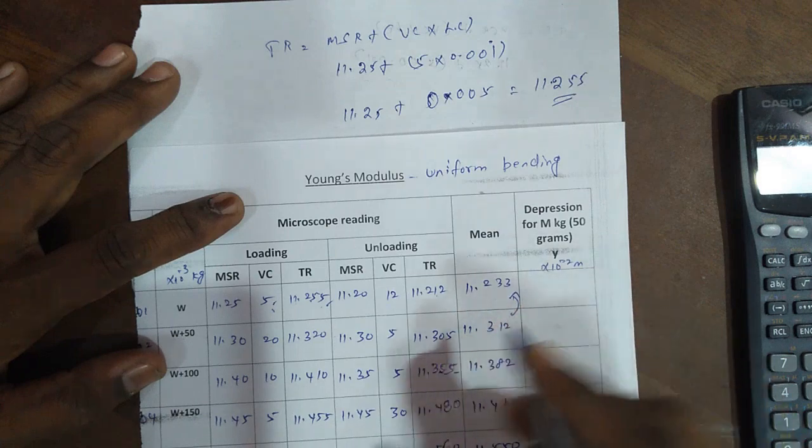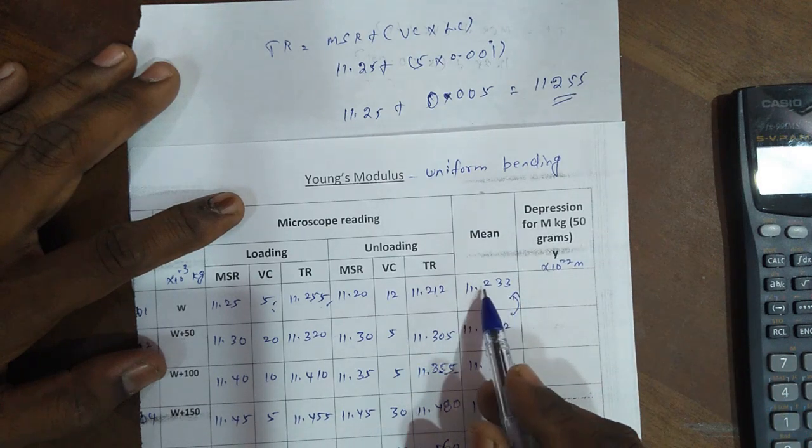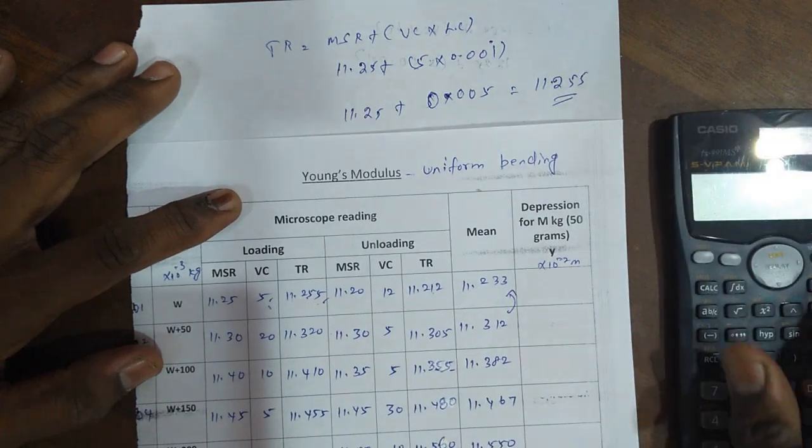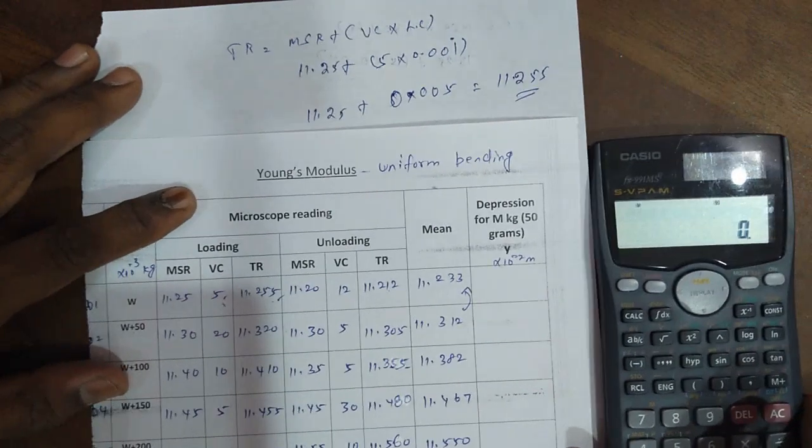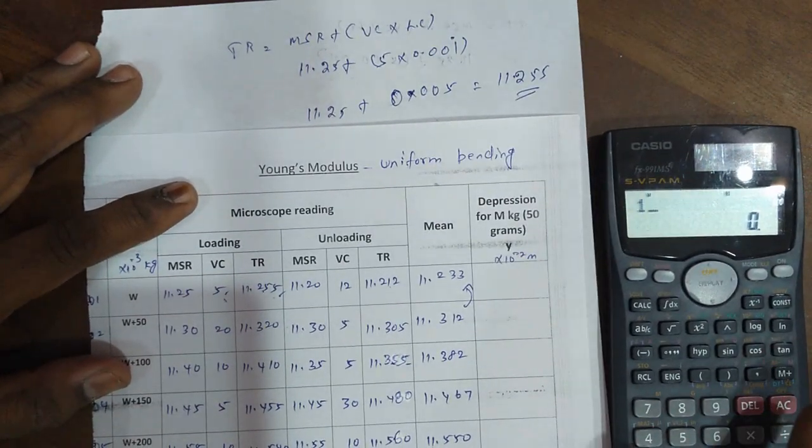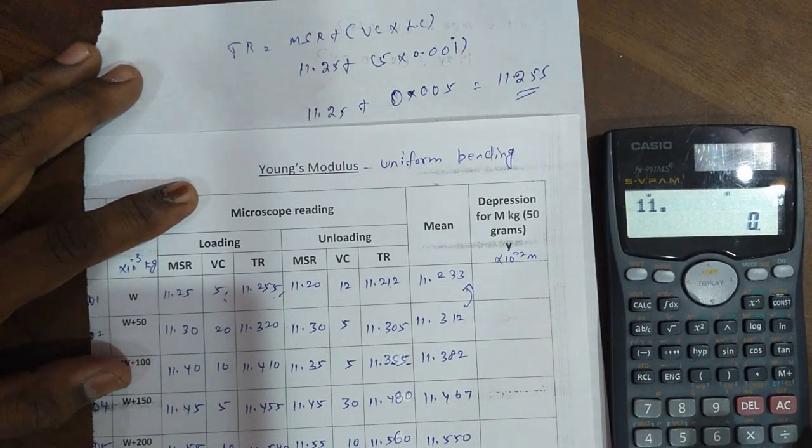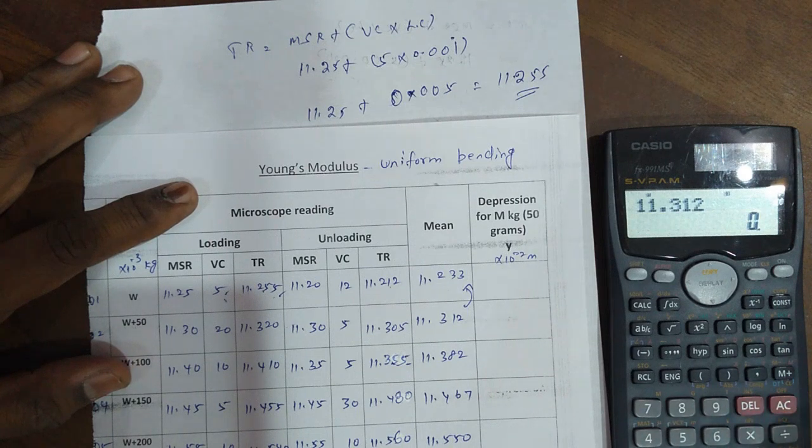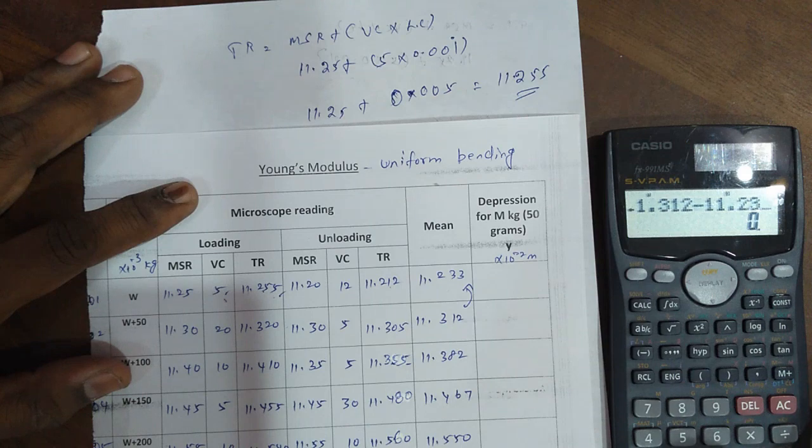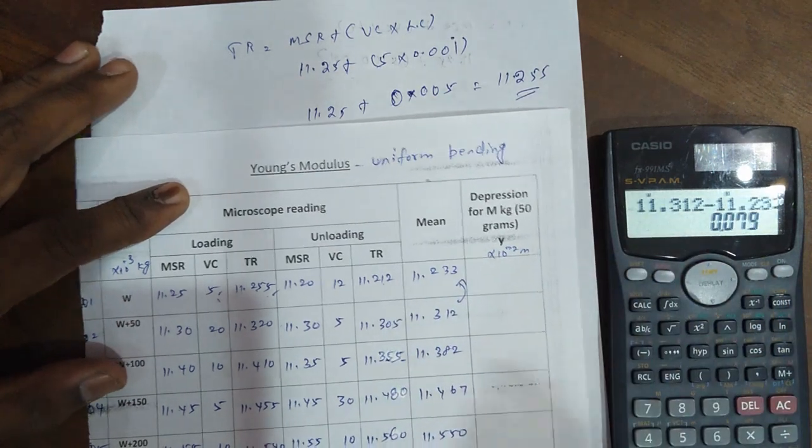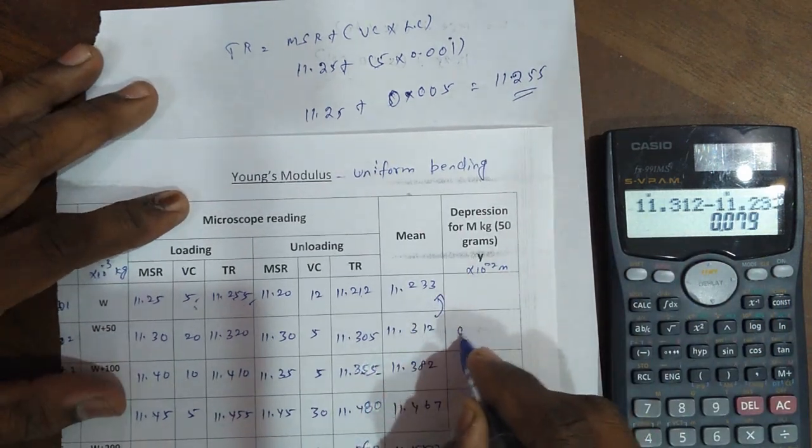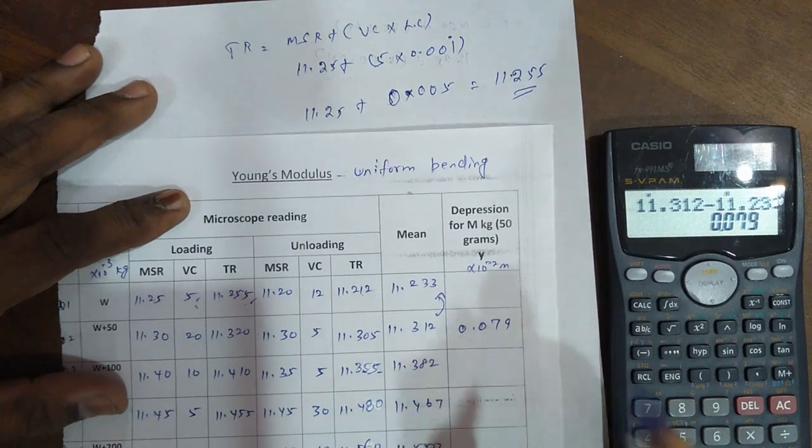So now we find W plus 50 minus W. So 11.312 minus 11.233. The answer is 0.079 centimeters.